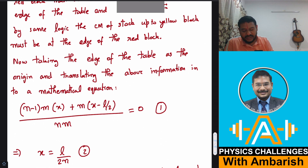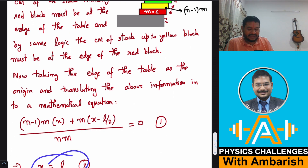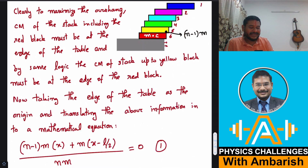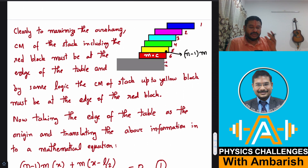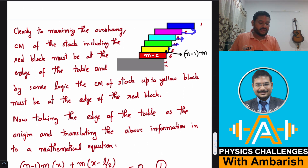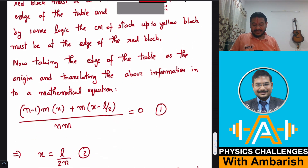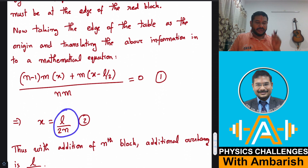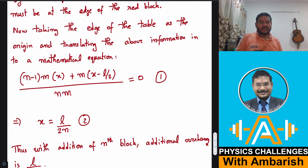Solving this equation gives x = L/(2n). This x is the overhang of the red block — the additional achievable overhang by the addition of one more (the nth) block. So up to the yellow block there was some overhang, and by adding the red block you get an additional overhang of L/(2n) units.